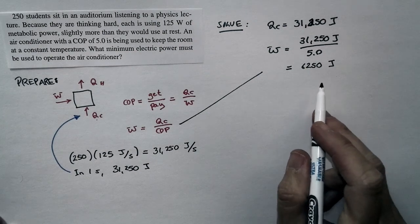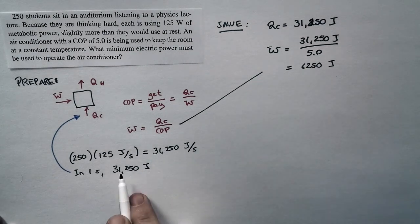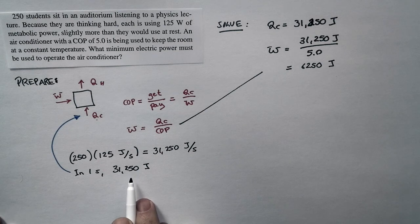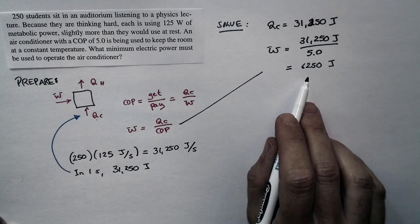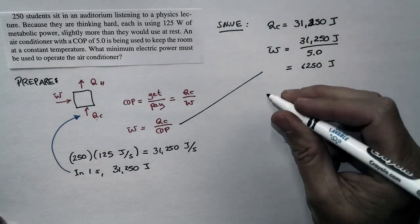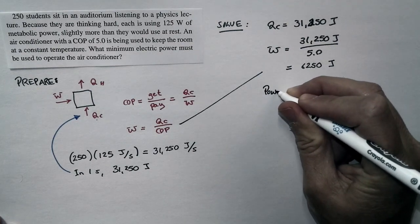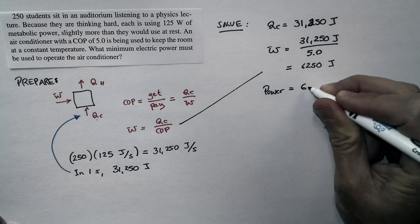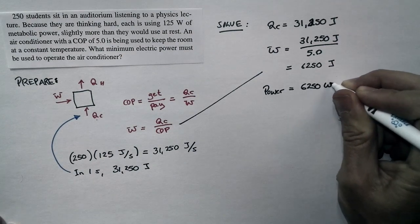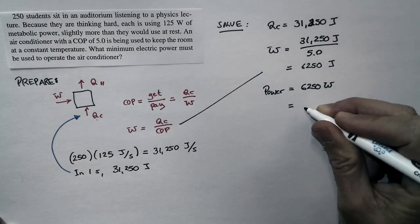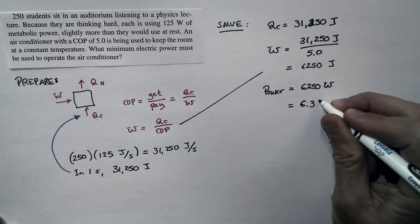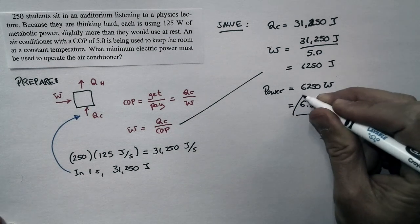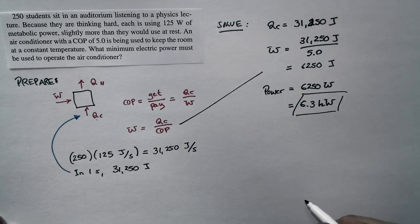That's the amount that has to happen to pump this heat. That's how much heat is being deposited in one second, and so the air conditioner requires this much electric energy every second. Therefore, the power that the air conditioner requires is 6,250 watts, or rounding it off to two significant figures and putting this in more convenient units, that's about 6.3 kilowatts.